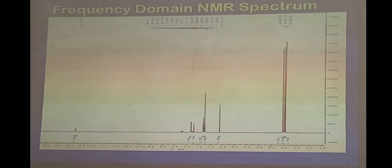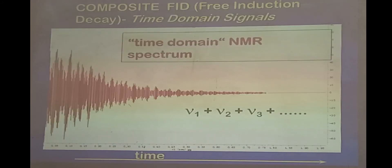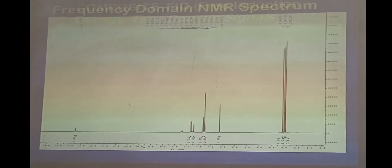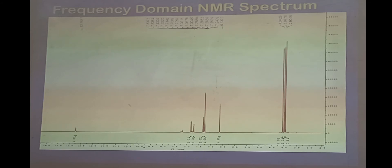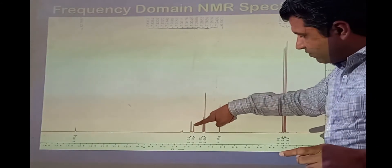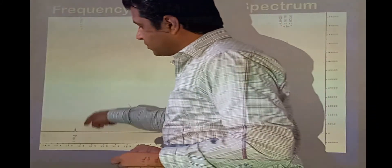When you convert the FID through Fourier transform it looks like this. Now you can see the frequency scale — it's not a time scale. This is a frequency scale which has been converted into ppm, which we will discuss later. It shows the intensity of these signals. From the number of signals you see here, you can determine the number of different types of hydrogens present in the molecule. We have one, two, three, four, five, six, seven, eight, nine, ten — so we have ten different types of hydrogens, each with different Larmor frequencies.